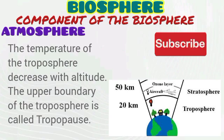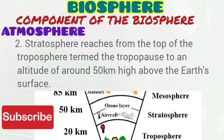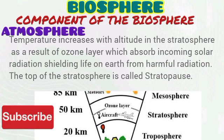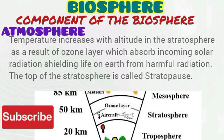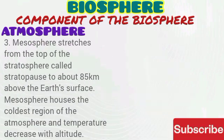The upper boundary of the troposphere is called the tropopause. The stratosphere reaches from the top of the troposphere — the tropopause — to an altitude of around 50 km above the surface of the ground. Temperature in the stratosphere actually increases with altitude, unlike the troposphere. It should be noted that the ozone layer is found in the stratosphere. The upper boundary of the stratosphere is called the stratopause.